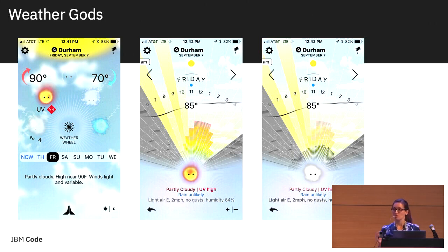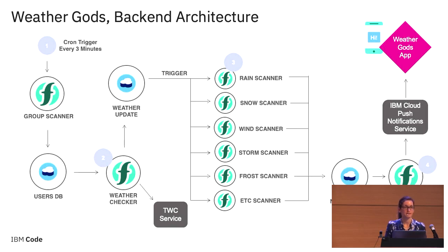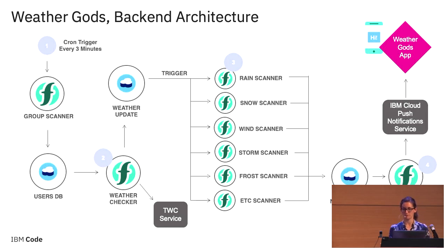Users can click through the various weather events or subscribe to specific notifications. For example, when I used to live in Austin, I'd probably subscribe to water god or ice god notifications for flooding or hail rather than high UV, since that was basically always high here. Each of the little green functions in the architecture diagram represents the functions they created for this backend.